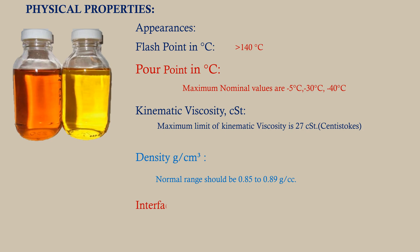Interfacial tension in Newton per meter: interfacial tension refers to the molecular attractive force between the unlike molecules of oil and water. It is measured in Newton per meter and indicates the deterioration of transformer oil. Soluble contaminations in the oil decrease the interfacial tension values.